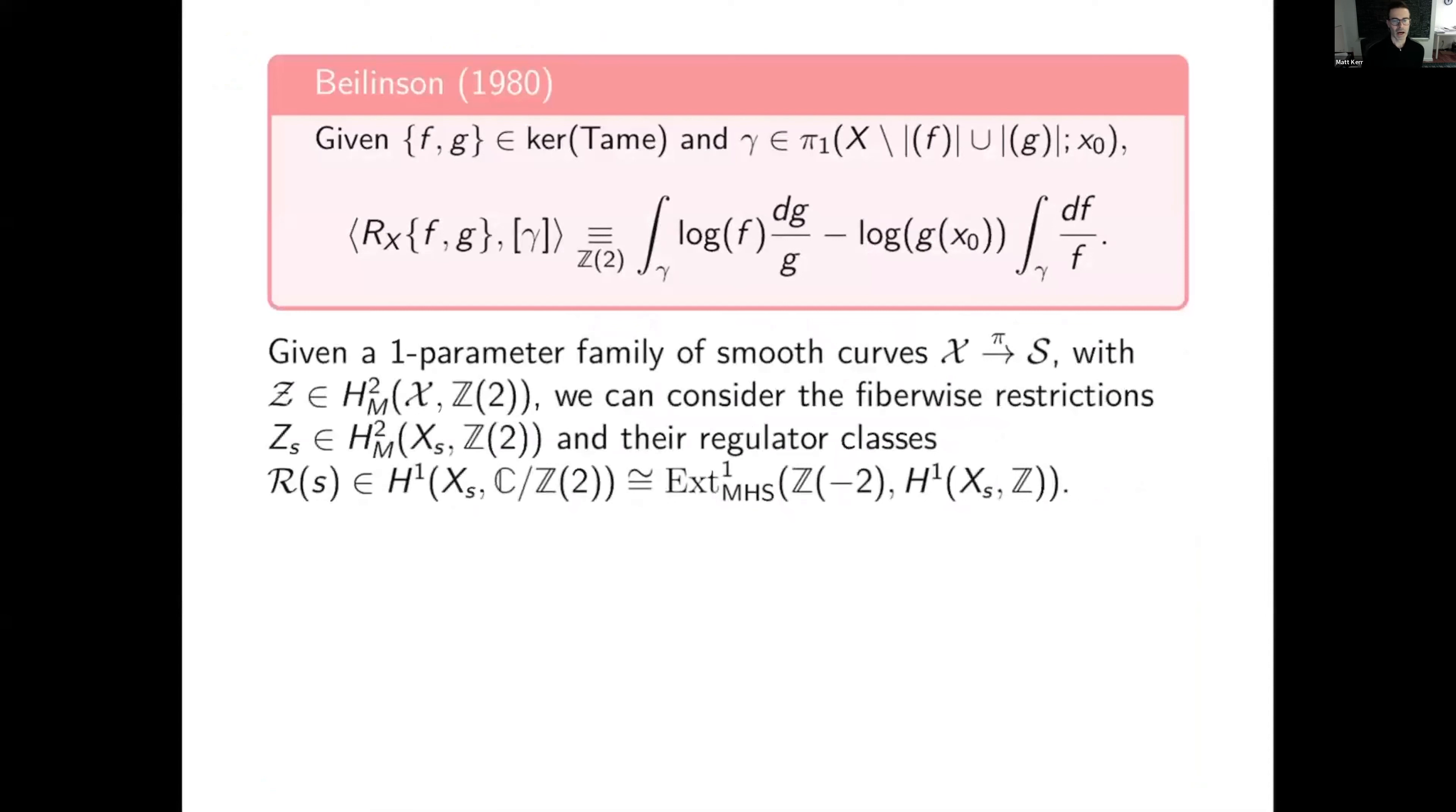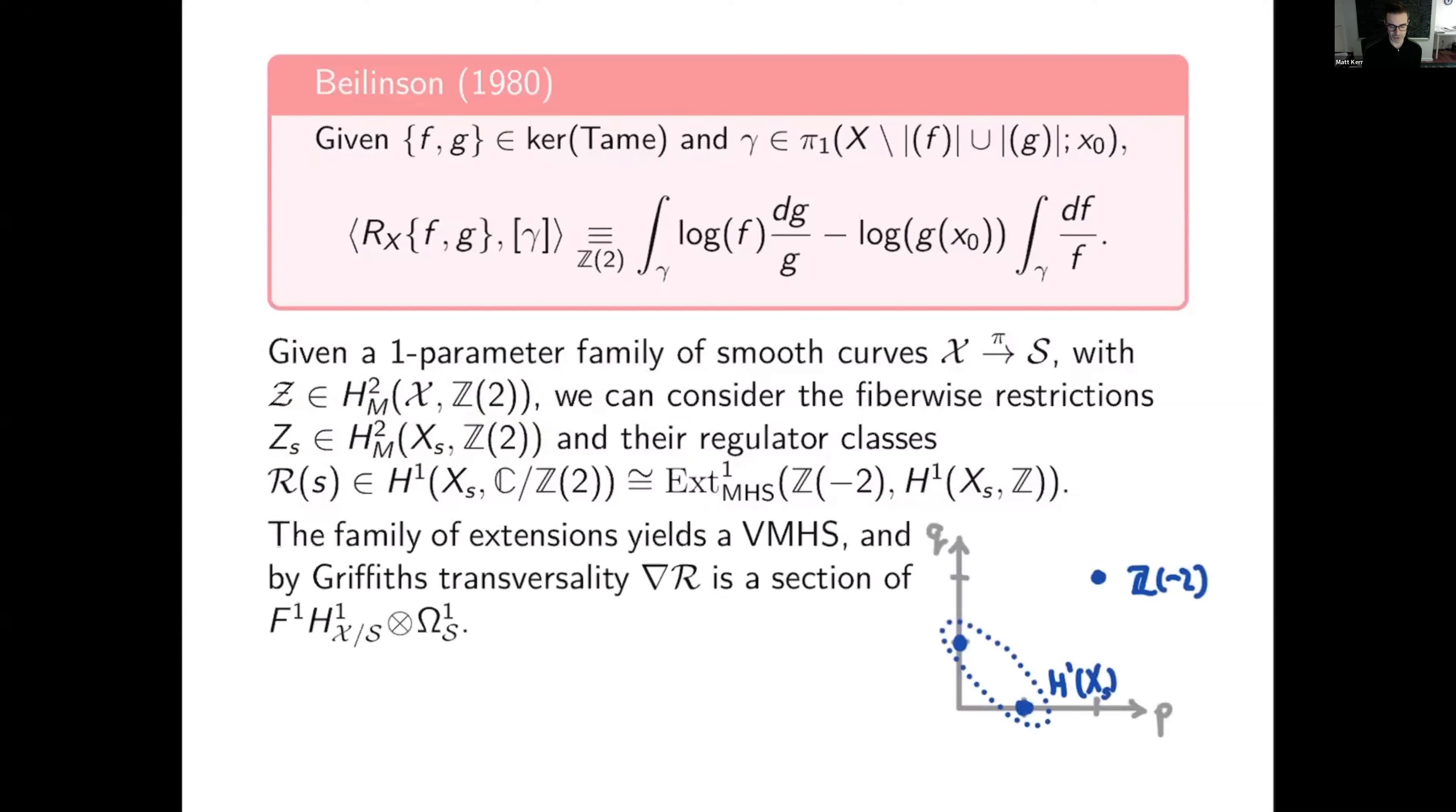So how do we use this in the case of a family of curves? And if I have a family of typical cohomology classes like that, we can consider their fiber wise extensions and the regulator classes of those fiber wise extensions and interpret the cohomology classes as elements in this x group mixed Hodge structure. So that gives you a variation of mixed Hodge structure that looks very much like the one we had coming from the Hori-Vafa model. So we have a two two class here extended by H1 of the curve.